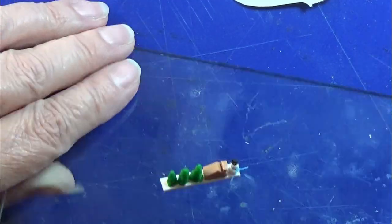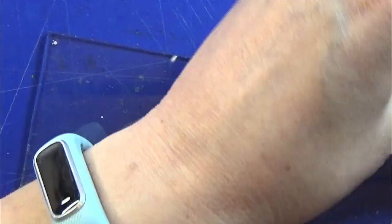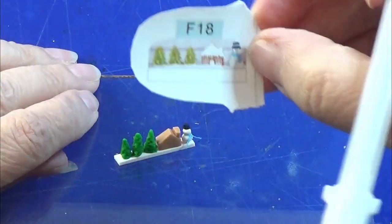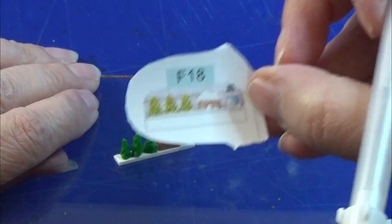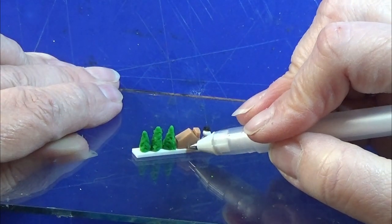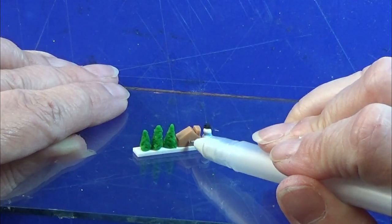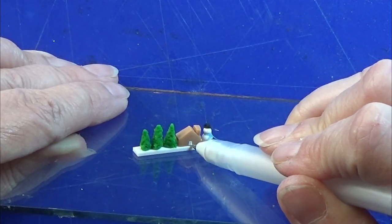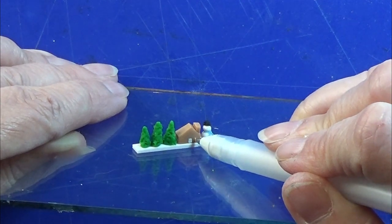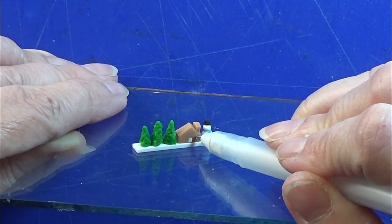Then I am going to take my jelly roll, my white jelly roll 05, and I am painting on the door and the windows from the picture. I wanted it to be a little more detailed but it was quite difficult to paint these things on that small, so I just made them all white.